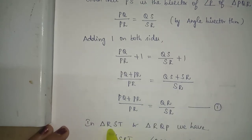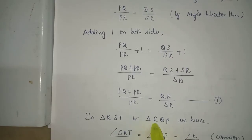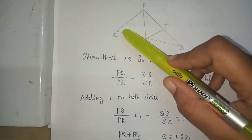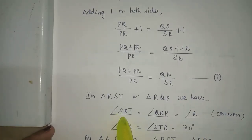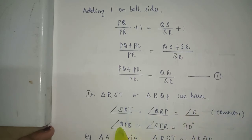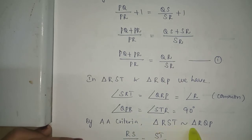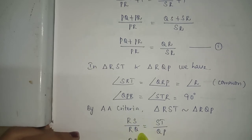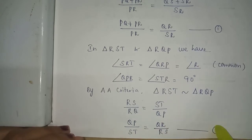Next, considering triangle RST and triangle RQP: angle SRT equals angle QRP (angle R is common) and angle QPR equals angle STR equals 90 degrees. By angle-angle criteria, triangle RST is similar to triangle RQP. Therefore RS by RQ equals ST by QP, giving QP by ST equals QR by RS — equation 2.